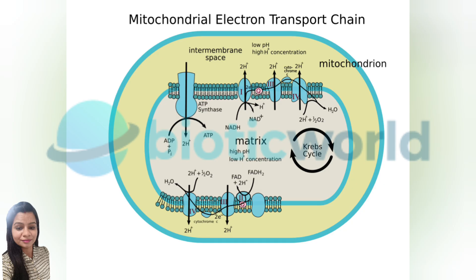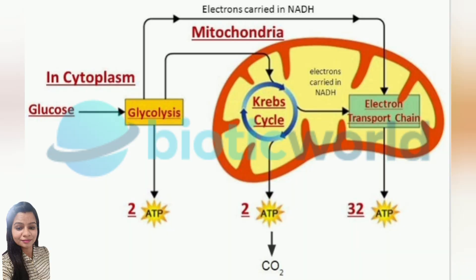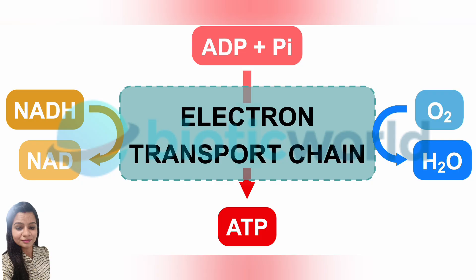Now, the question comes to mind: where does the ETC take place? In eukaryotic cells, the ETC takes place in the inner mitochondrial membrane. Mitochondria are known as the powerhouses of the cell because this is where most ATP is produced. In prokaryotic cells, which lack mitochondria, the electron transport chain occurs in the plasma membrane.